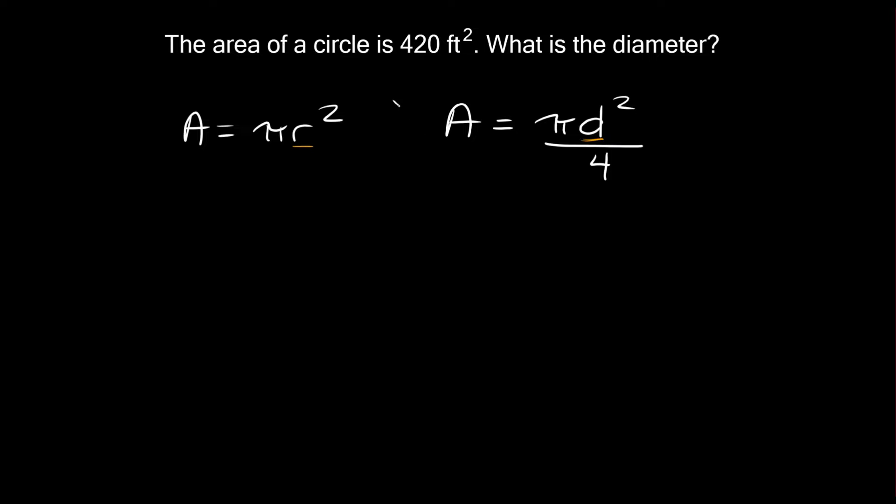What do we know? The problem tells us that the area of the circle is 420 feet squared. Let's plug in 420 feet squared for A. So 420 feet squared equals pi times d squared all over 4.